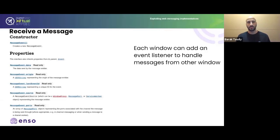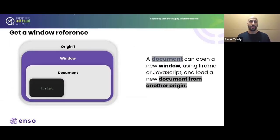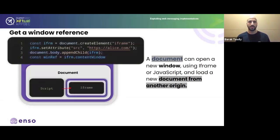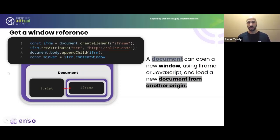To send messages, we first need a window reference. We can get one by embedding an iframe — creating it, setting its src attribute to the target page, appending it to the body, and using iframe.contentWindow to get the reference. Alternatively, we can use window.open to pop up a new window or tab and get the same window reference that way.